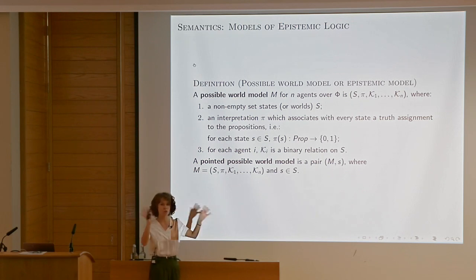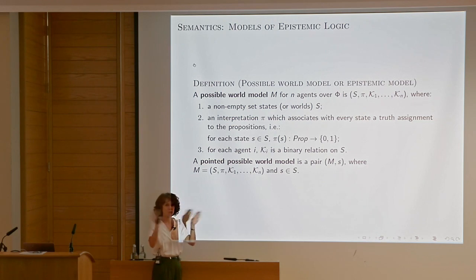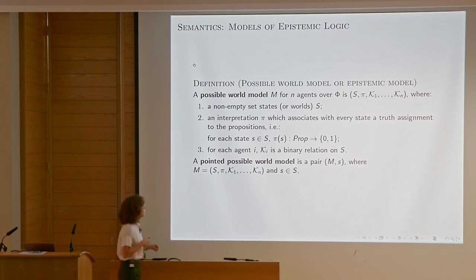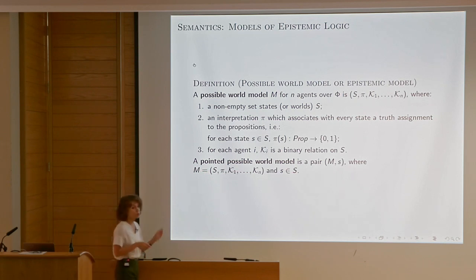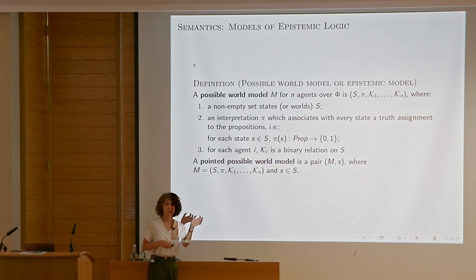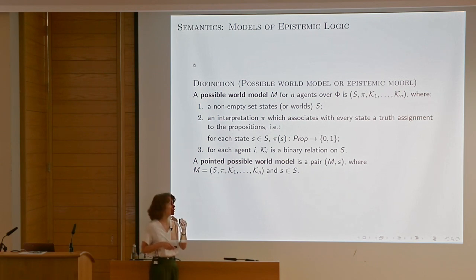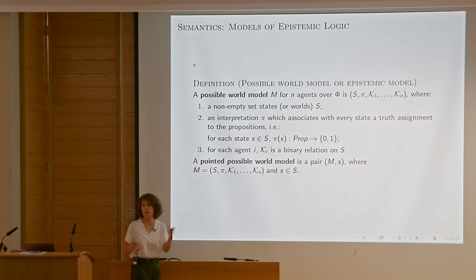We had the question mark between the two scenarios — the San Francisco scenarios. This is the accessibility relation for the agent, so the agent cannot distinguish between those two. She doesn't have enough information to say which is the actual world. A pointed possible world model is a pair of this structure together with one state distinguished as the actual state — the agents might not know which it is, but we as modelers know.